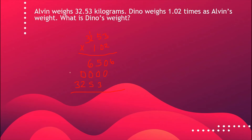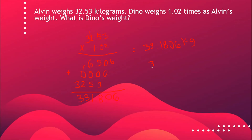Now let's add to find our product. Bring down six. We have eight, we have eleven — carry one — three, and three. Let's count how many decimal places we have: four decimal places. So let's count four places to the left: one, two, three, four. Dino's weight is 33.1806 kilograms. We could round this off to the nearest hundredths, so it will be 33.18 kilograms. This is now the weight of Dino.